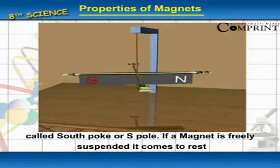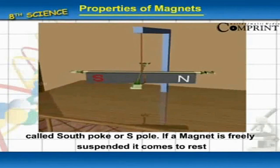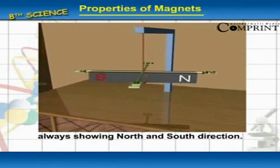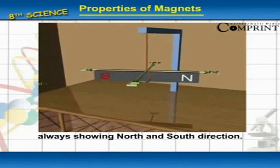If a magnet is freely suspended, it comes to rest always showing the north and south direction.